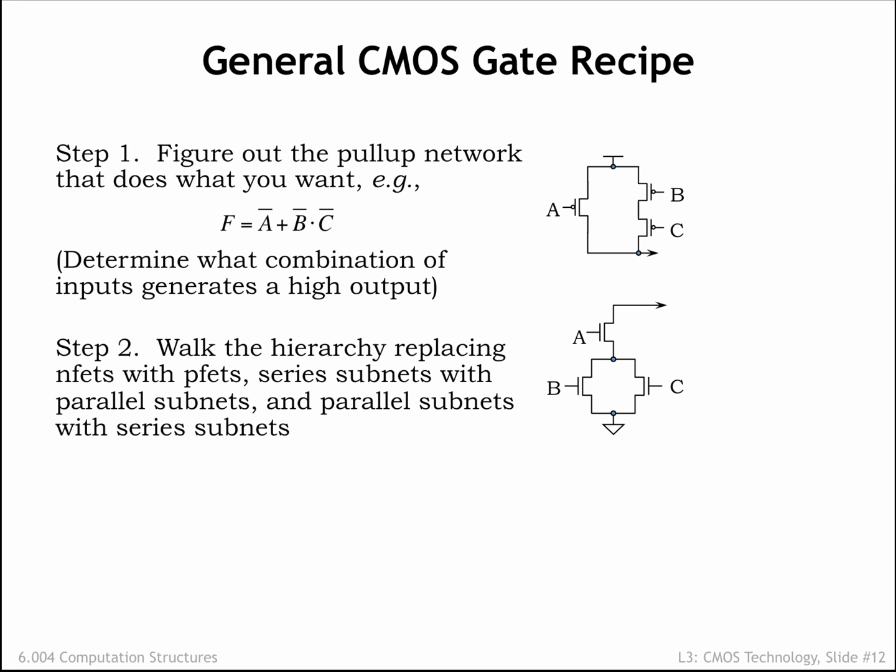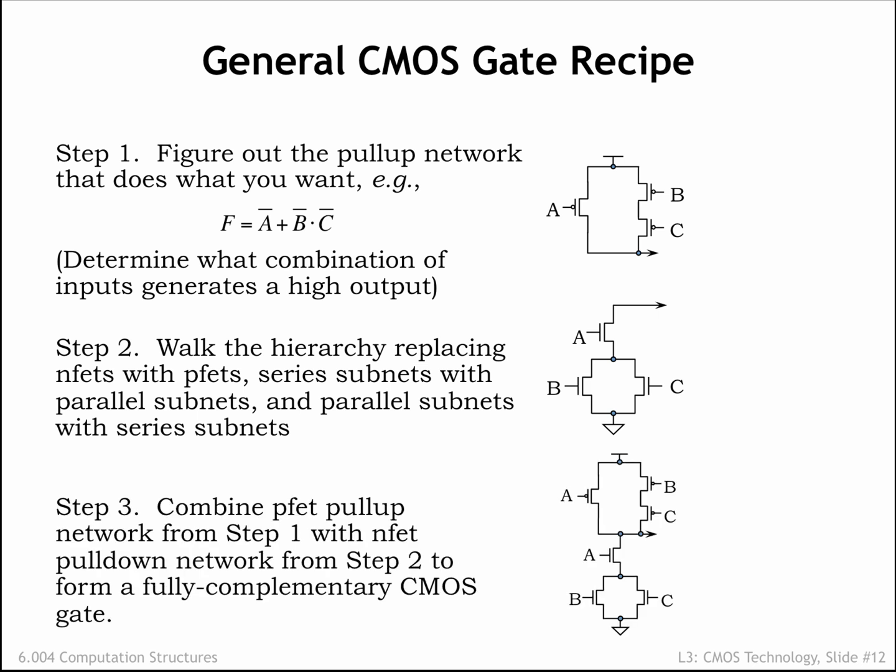The complementary pull-down circuit uses NFETs, with a switch controlled by A in series with a parallel sub-circuit consisting of switches controlled by B and C. Finally, combine the pull-up and pull-down circuits to form a fully complementary CMOS implementation. With practice you'll get comfortable with the CMOS design process.